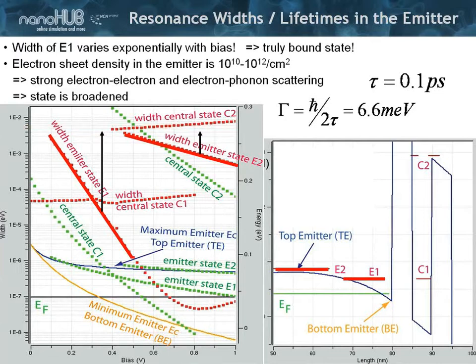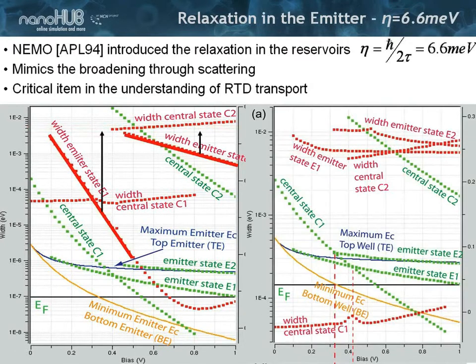That solution is one of the key elements or the key achievements of this NEMO-1D tool that was developed at Texas Instruments. To develop a boundary condition that can actually treat the states in the emitter properly, where you assume that there's strong scattering and that there is a relaxation in the emitter. That was a key achievement to model resonant tunneling diodes properly. This is a key element for you to understand how this works from the physics insight.